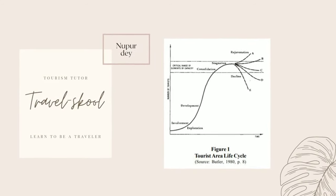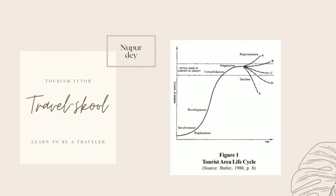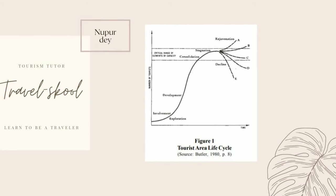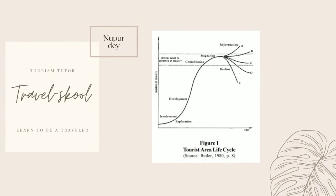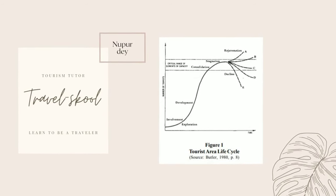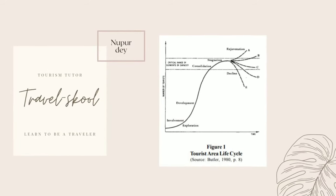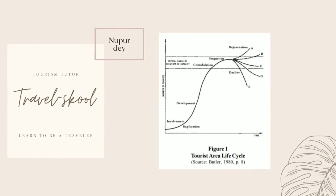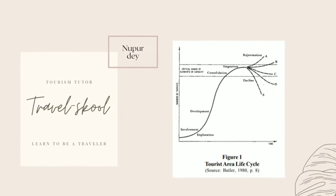Considering the various stages, we start with the exploration stage on the extreme left, where a person is in an adventurous mode and finds a place that isn't popular with tourists yet. Once that person talks about the destination to others, more tourists come to know about it, leading to increased flow and involvement — which denotes the involvement stage.